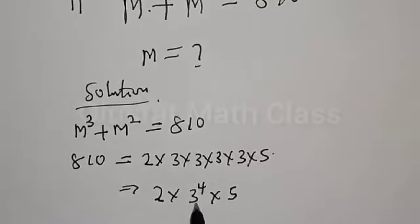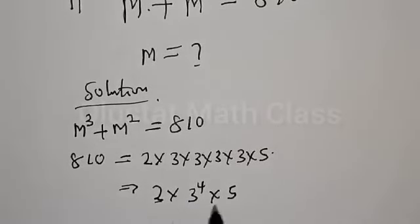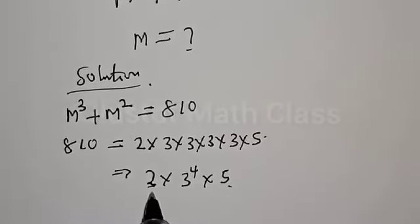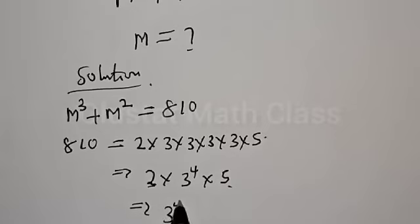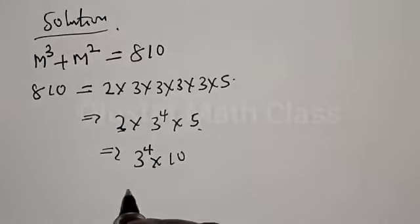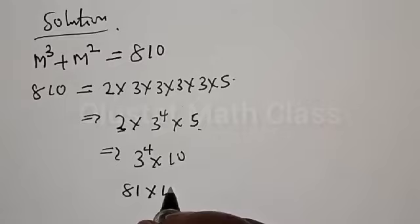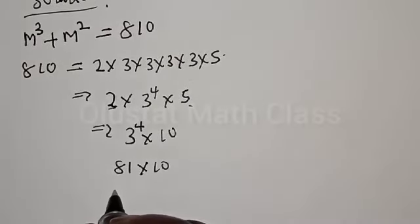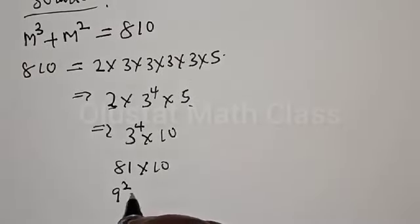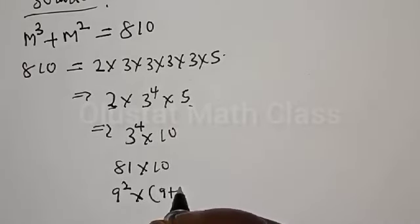Then we have 2 multiplied by 3 raised to the power of 4, multiplied by 5. So we have 3 to the power of 4, and here is 2, here is 5. This implies that we have 3 to the power of 4 multiplied by 10. So 3⁴ is 81, multiplied by 10.